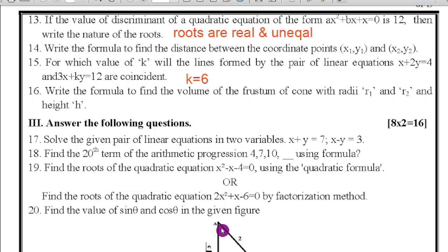Thirteenth question: if the value of the discriminant of a quadratic equation of the form ax² + bx + c = 0 is 12, then write the nature of the roots. Here what happens, 0 is delta is greater than 0. When the delta is greater than 0, roots are real and unequal. Question number 14: write the formula to find the distance between the coordinate points (x₁, y₁) and (x₂, y₂). So distance formula, that is d = √[(x₂ - x₁)² + (y₂ - y₁)²]. Question number 15: for which value of k will the lines formed by the pair of linear equations x + 2y = 4 and 3x + ky = 12. So here what happened, 1/3 = 2/k because this is one of the parallel lines. Therefore k value will become 6.